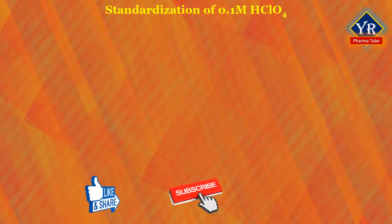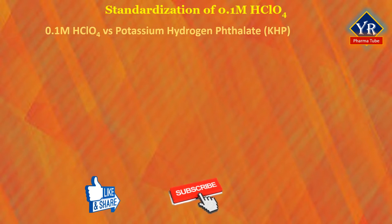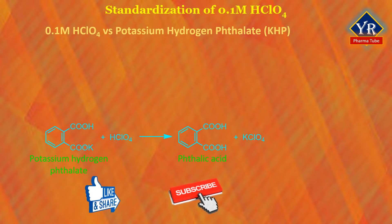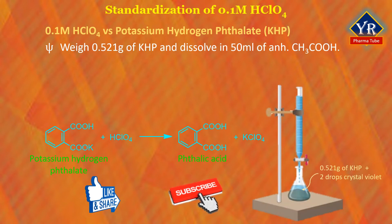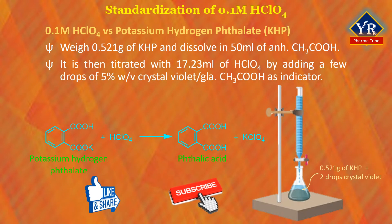Procedure for the standardization of 0.1 molar perchloric acid. Standardization of the above prepared 0.1 molar perchloric acid with analytical reagent grade potassium hydrogen phthalate. Weigh accurately about 0.521 grams of potassium hydrogen phthalate on an analytical balance and dissolve in 50 ml of anhydrous acetic acid. This solution is titrated with 17.23 ml of the perchloric acid solution to the end point by adding a few drops of 5% weight by volume crystal violet in glacial acetic acid as indicator.